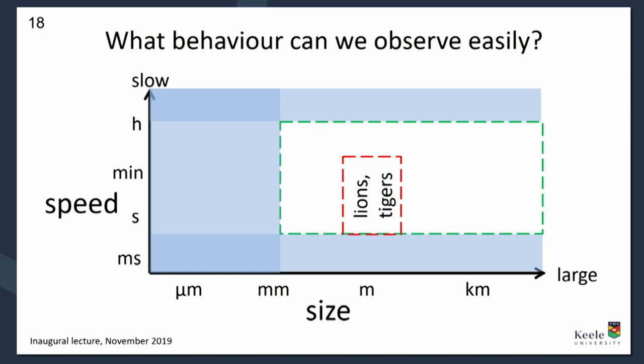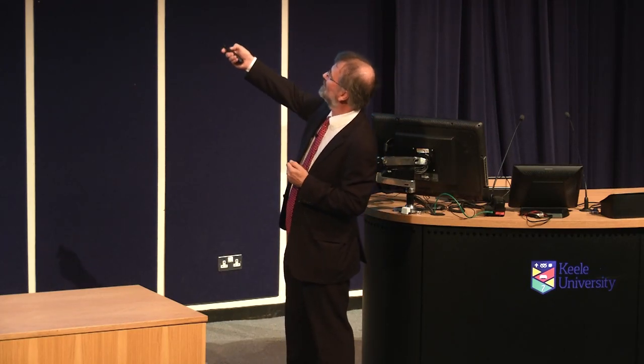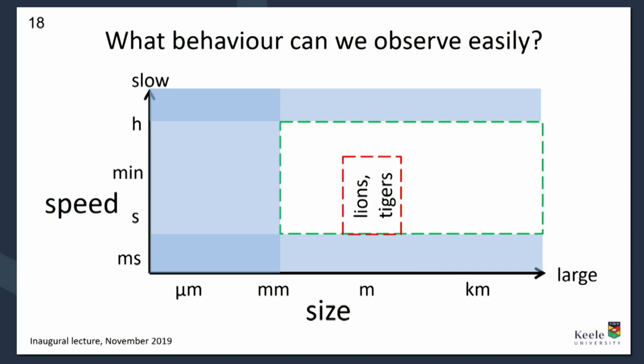When I ask students what area of biology they're interested in, they often say humans, then animals — lions, tigers, monkeys — things that are our kind of size and do things on our kind of timescale. But there are many things that aren't on that scale. Plants, for example — we can all see them, but we don't see their behaviour. We don't see how the leaves arrange themselves to catch the light. So the title of my talk is a bit of a homage to Sir David Attenborough's The Secret Life of Plants.